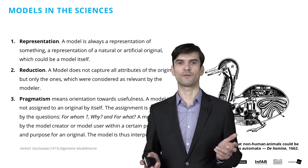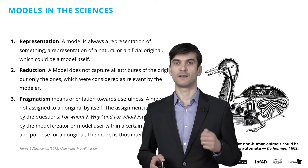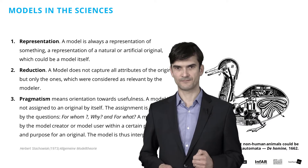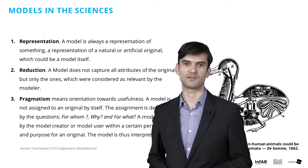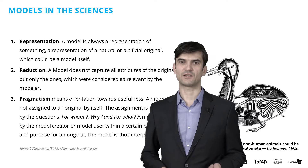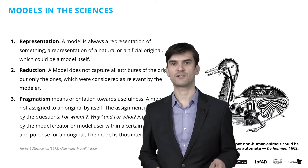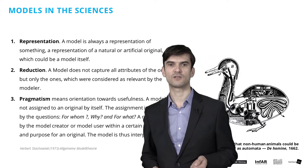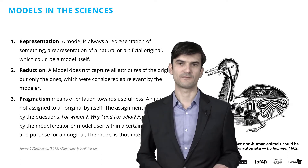We begin with scientific models. In general, they have three characteristics. First: representation. A model is always a representation of something — a representation of a natural or artificial original, which could itself be a model.